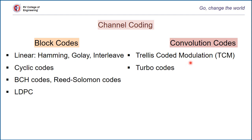Recently, a near-channel-capacity error-correcting code called turbo code was introduced. This error-correcting code is able to transmit information across the channel with arbitrarily low, approximately zero, bit error rate. This code is a parallel concatenation of two component convolution codes separated by a random interleaver, so it is initially complex when compared with the basic convolution code algorithm. However, both of these famous codes are generated with the basic structure of convolution codes.